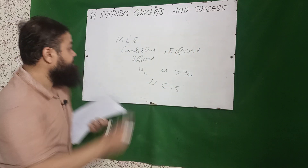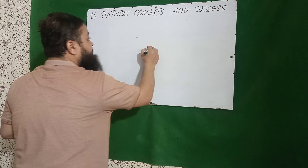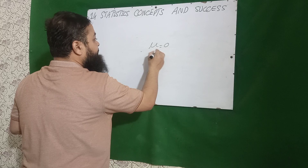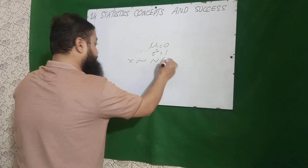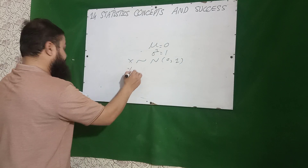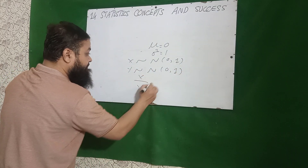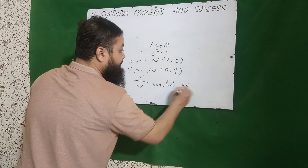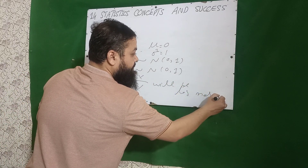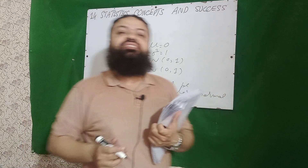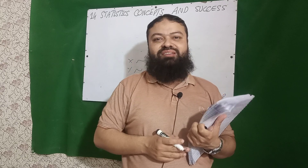In the standard normal distribution, mean is zero and variance is one. If X follows standard normal N(0,1) and Y also follows normal N(0,1), then X over Y will follow a log-normal distribution. Dear students, I will wait for your precious comments on today's lecture. Assalamu Alaikum.